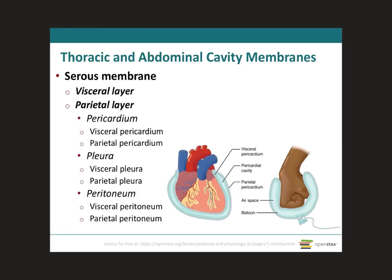A membrane is defined as a thin tissue that covers, lines, separates, or connects structures. The thoracic and abdominal cavities, together with the organs inside them, are lined by a membrane called the serous membrane. This membrane has two sides: the visceral layer and the parietal layer. Visceral means organ, and parietal means wall.